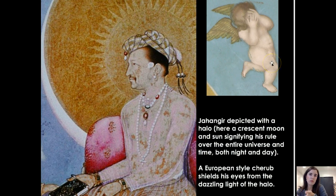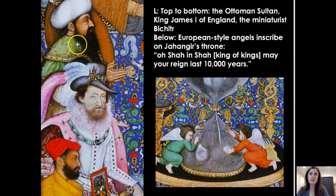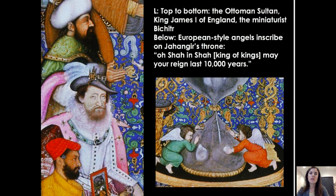The cherub could have been intended as a crying cherub, but in this image is supposed to be an overwhelmed cherub covering his eyes. Another possibility is that the cherub could be crying because of the hourglass — the idea that Jahangir is running out of time. Zooming in on the two kings, you can see the Ottoman Sultan and King James the First of England wearing very elaborate dress in comparison to the Sufi. Angels are inscribing on Jahangir's throne: 'O Shah of Shah' — O King of Kings — 'may your reign last ten thousand years,' which supports the reading that they're hoping he will rule forever.